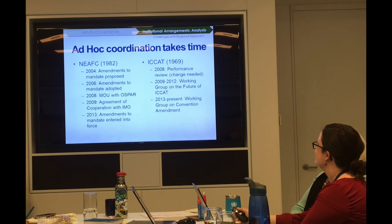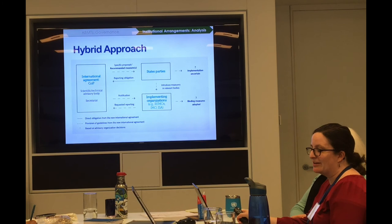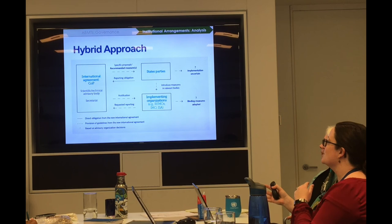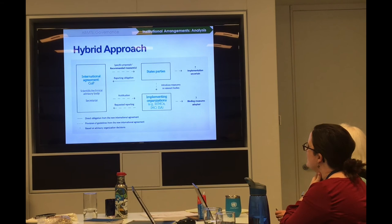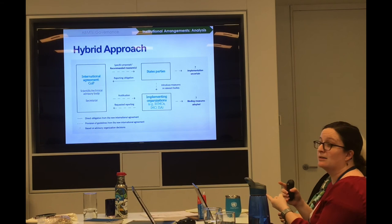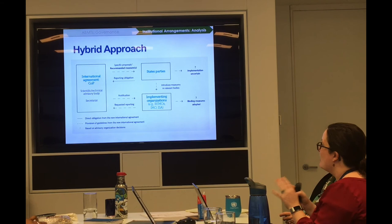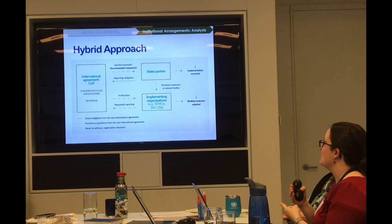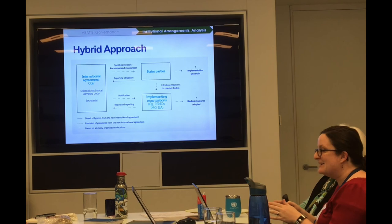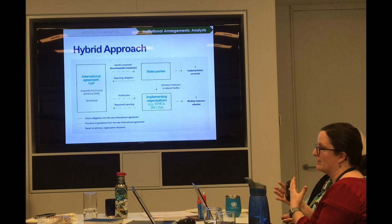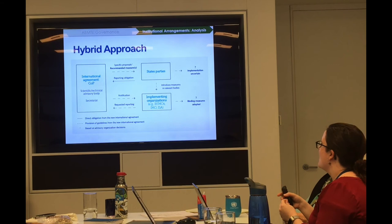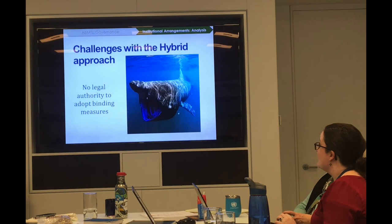Moving on to the hybrid approach: under this hybrid model, the new BBNJ agreement would create a decision-making body, a scientific advisory body, and a secretariat. However, it wouldn't be able to create marine protected areas or any sort of associated management measures. At best, they could recommend some specific measures, but it would be upon states parties to decide whether or not they actually adopted them and how they would carry that out within other implementing organizations. In this instance, implementation is uncertain. The main challenge with the hybrid approach is that it has no legal authority to adopt binding measures — in other words, it has no teeth.